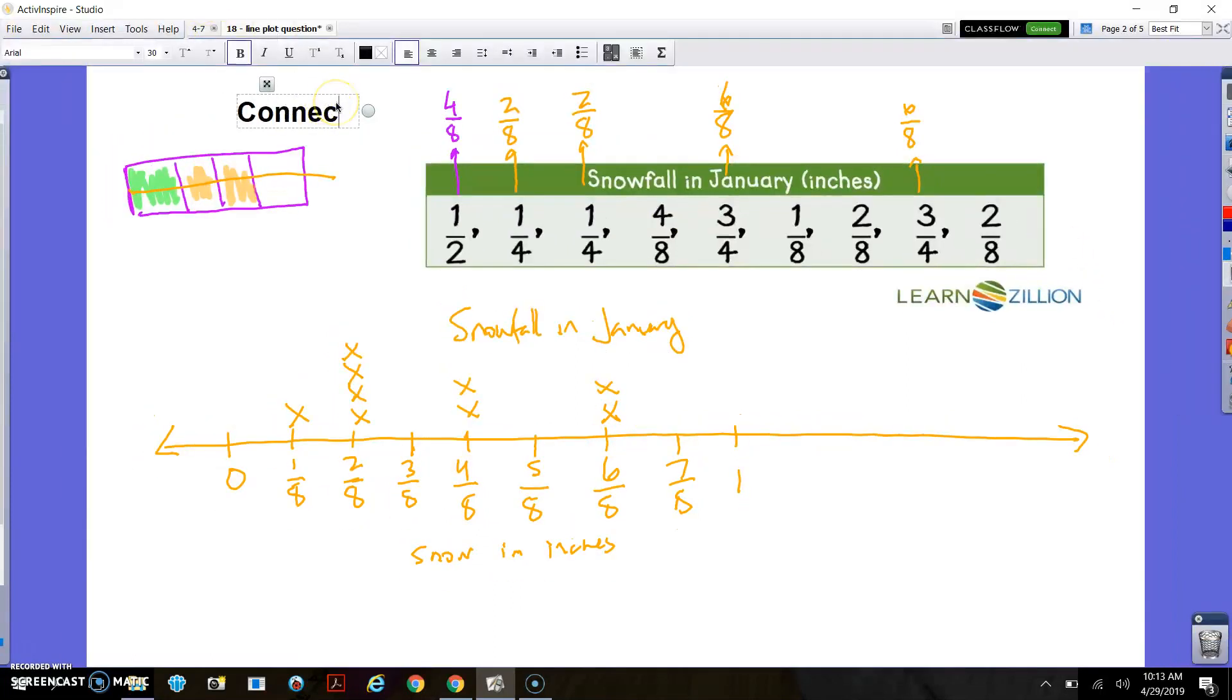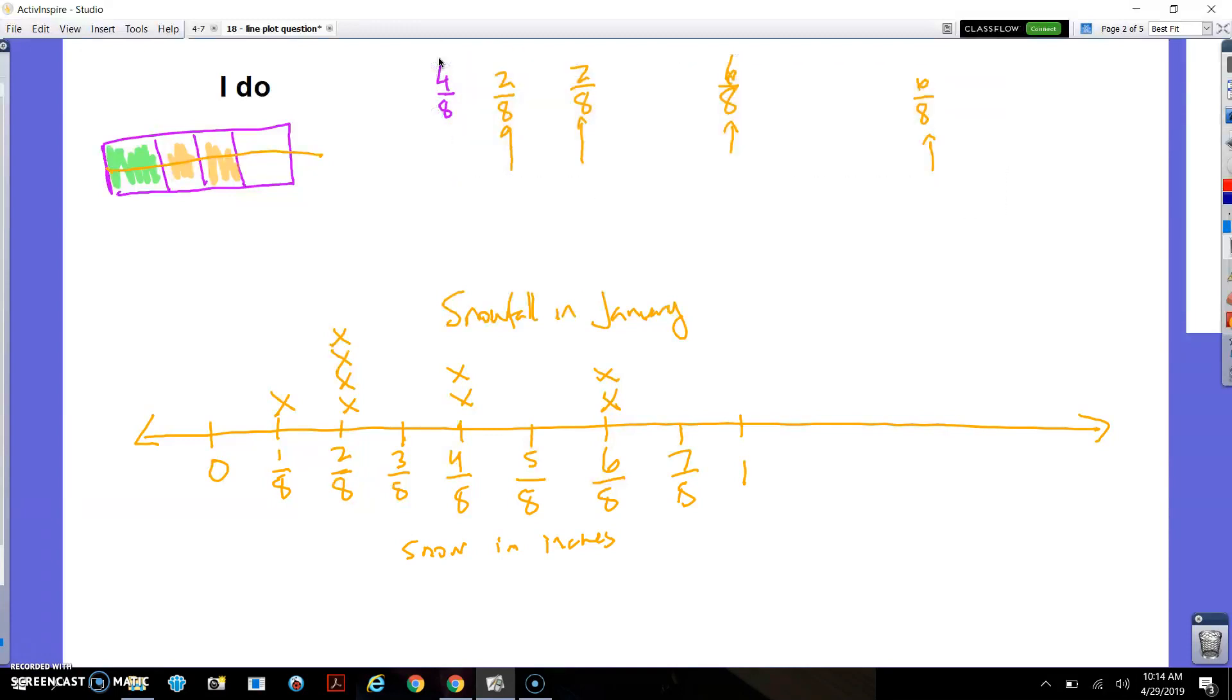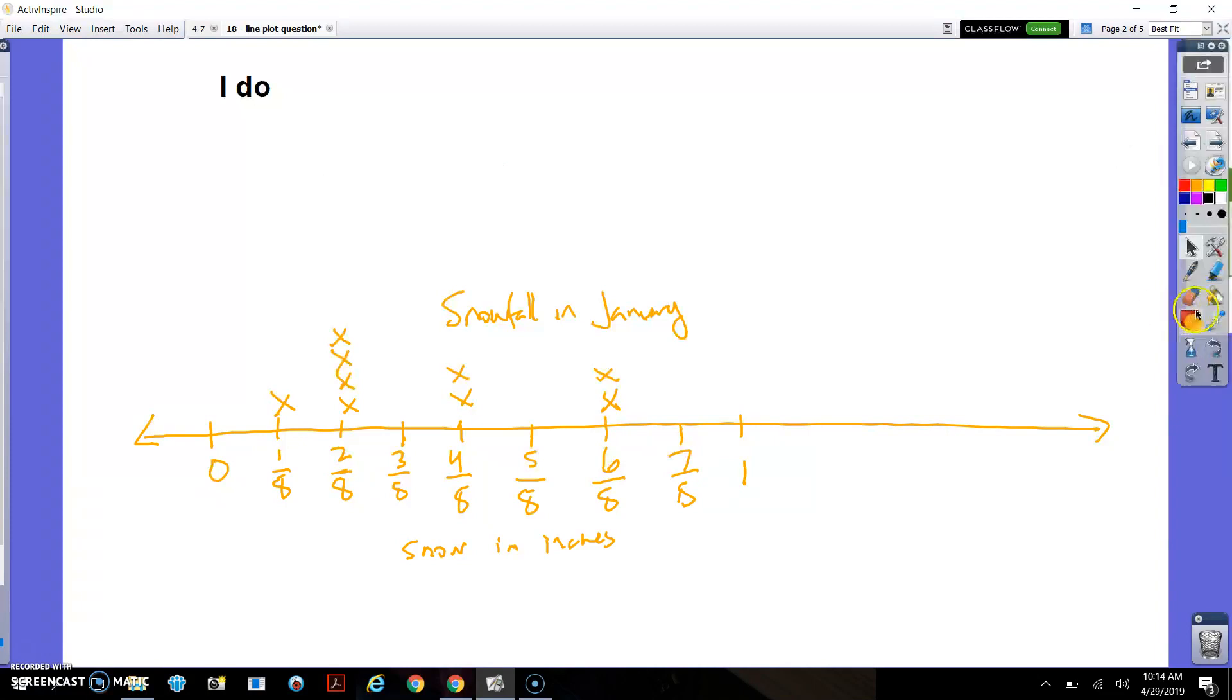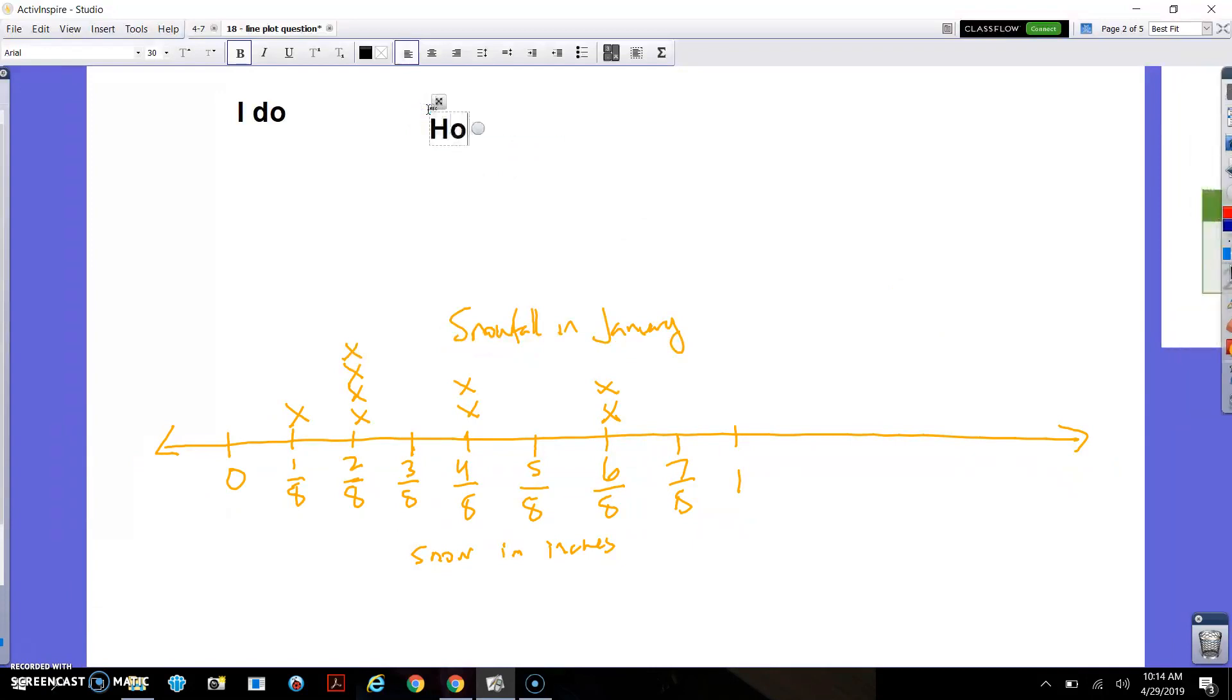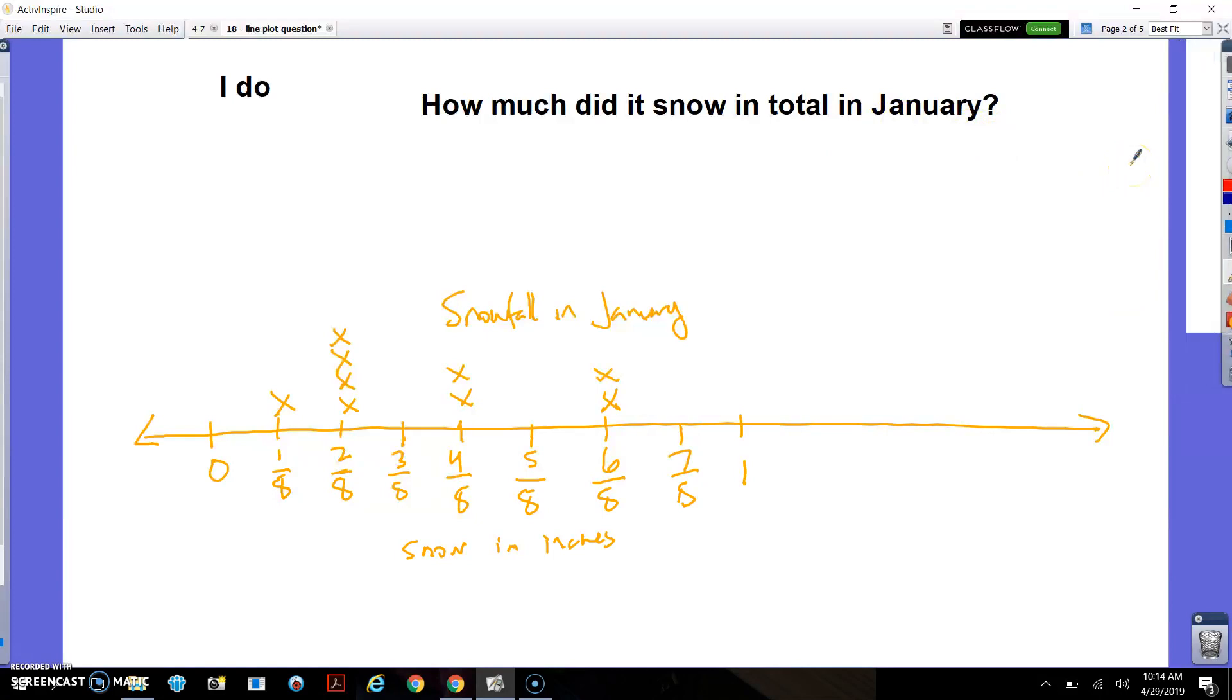So one of the common questions you'll be asked, let me get rid of this chart here. Let's just say I had just this line plot. And let's say each of these represents a day that it snowed in January. So this January it snowed nine times, right? So a common question you might get asked will be something like this. How much did it snow in total in January? Now look at this. It snowed nine different times. It snowed a different amount each time. Well, how much did it snow all together? So total, that's generally a word that means we're adding. We're like combining things together.